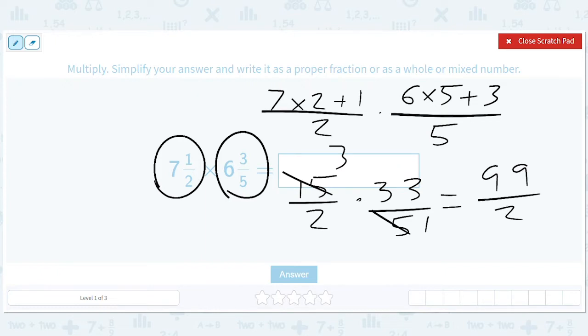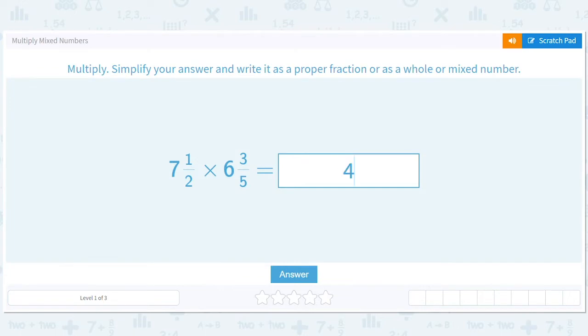So this is going to be ninety-nine halves. And so now we have to convert back because we have an improper fraction. So we divide. And we get forty-nine and one remainder, so it should be forty-nine and a half. That's our final answer.